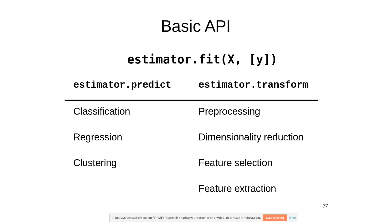The interface for algorithms in scikit-learn is the same everywhere: all models are Python classes with a fit method taking X and y. Supervised models have predict and score methods. Unsupervised models only receive X during fitting. If you want to transform data into a new representation — scaling, PCA, feature selection — you use the transform method. Everything has fit, and depending on the model type, either predict or transform, or sometimes both.